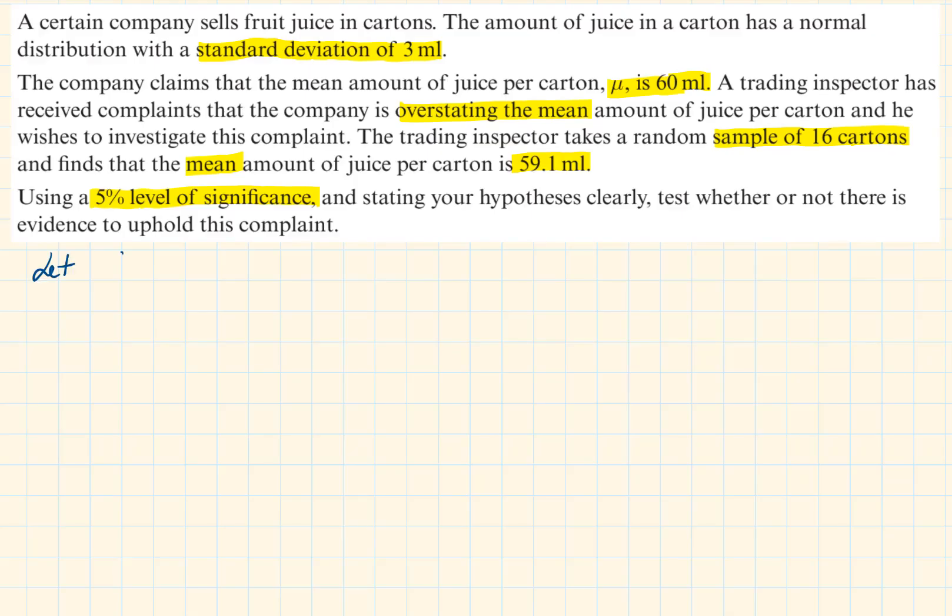Let the random variable x be the amount of juice in a carton and assume the null hypothesis of the population that the random variable x is normally distributed with mean 60 and variance 9.